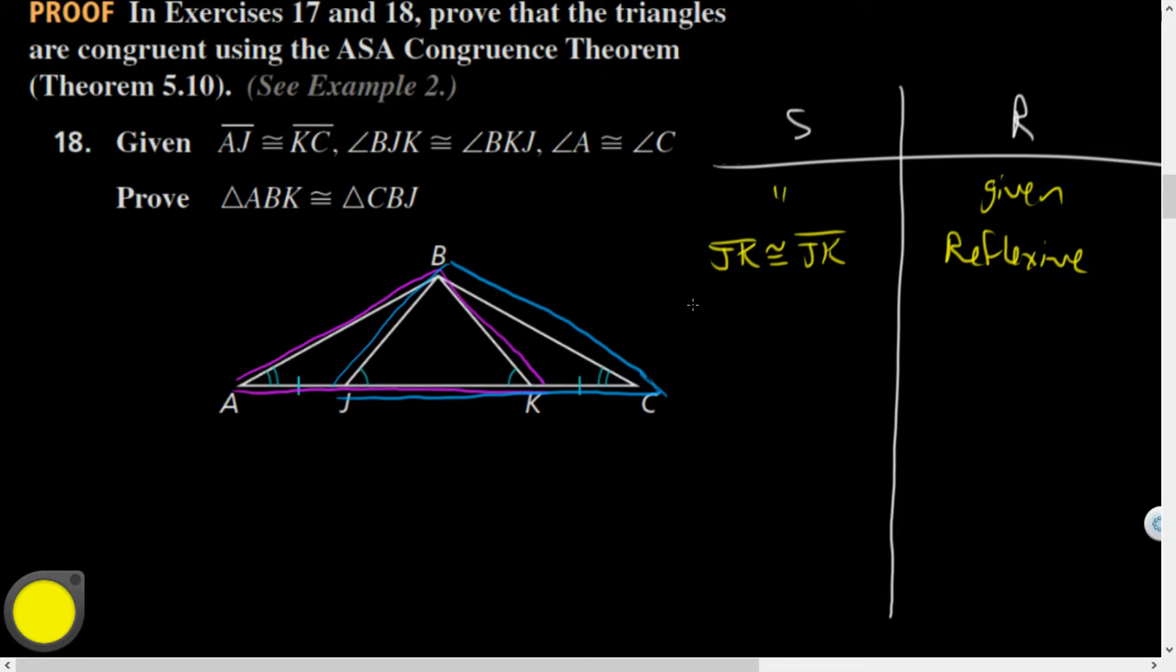By segment addition postulate, I could have JK equals JK by definition of congruent first. We would say AJ plus JK is equal to AK, and we also would have KC plus JK is equal to JC. Those are both segment addition postulate.